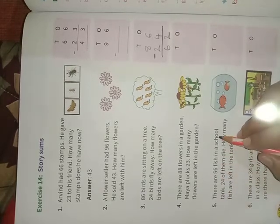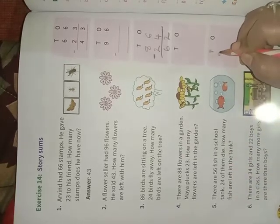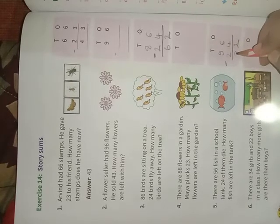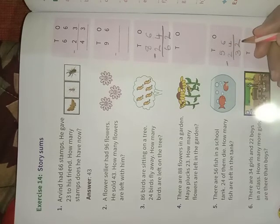Now I will be solving one more problem. There are 56 fish in a school tank, 24 of them die. So there were 56 fishes and 24 died. How many left children? You have to tell me now. 6 minus 4, the value is 2. 5 minus 2, the value is 3. I have done counting backward in my mind and written the answer. Like this way you all can solve the other problems children. Thank you, have a nice day.